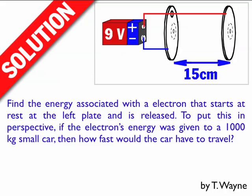The example question is to find the energy associated with an electron as it starts from rest at the left plate and is released. To put this in perspective, if the electron's energy was given to a 1000 kg car, then how fast would the car have to travel? So two questions to look at.